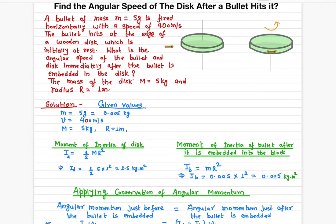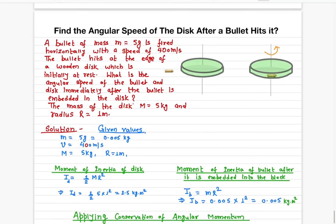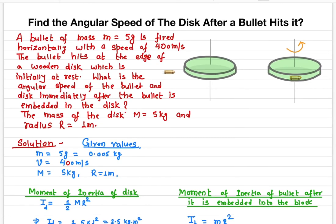From this result, you can find how many rotations the disk makes in 10 seconds — that is part of your assignment. Assuming no friction, calculate how many rotations it makes in 10 seconds. If you have any questions or comments, write them in the comment section below. Don't forget to like, share, and subscribe. Thank you.